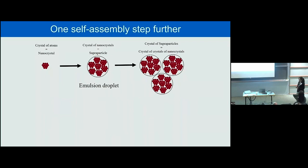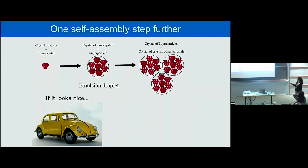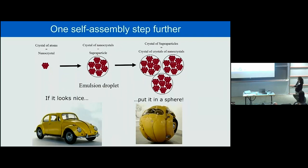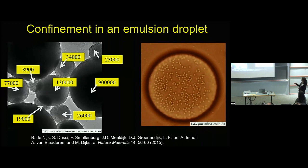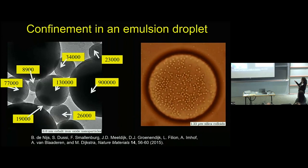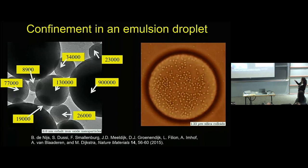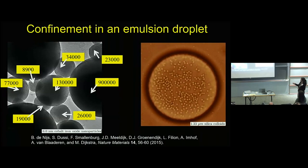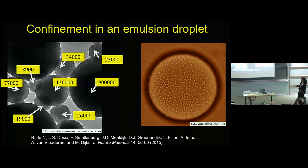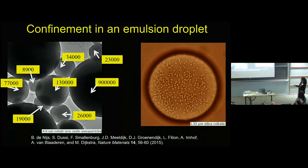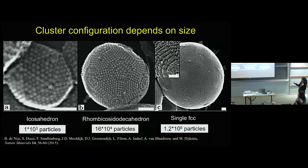The idea is that with every self-assembly step you can add new functionalities, making a hierarchical structure with many different functionalities. In work from many years ago, we started with big colloids — micrometer-sized particles in an emulsion droplet — and by evaporating the solvent made a supraparticle. We also did this for cobalt iron oxide particles using a very polydisperse emulsion, giving many different numbers of particles in the emulsion droplets. When you dry all these supraparticles and analyze them, you see very beautiful icosahedral clusters for up to 1,000 particles, a rhombicosidodecahedral cluster for 10,000 particles, and if you go toward a million particles, you just get an FCC domain.